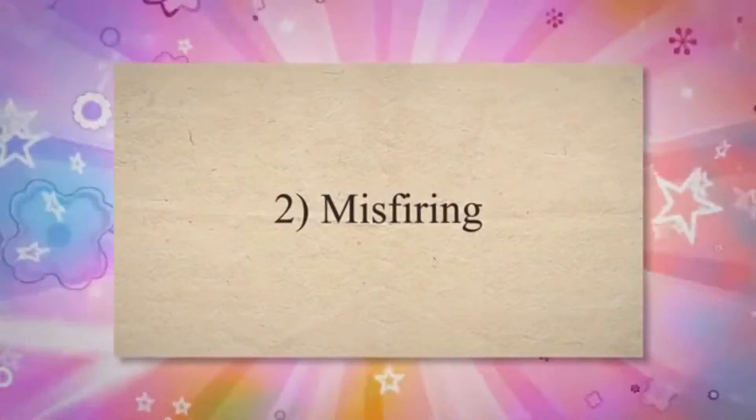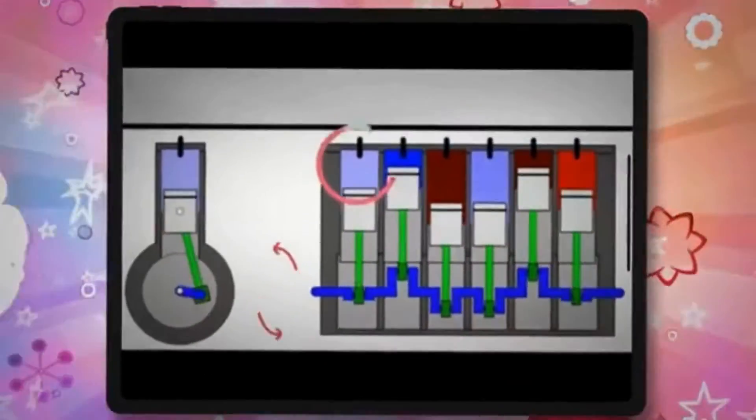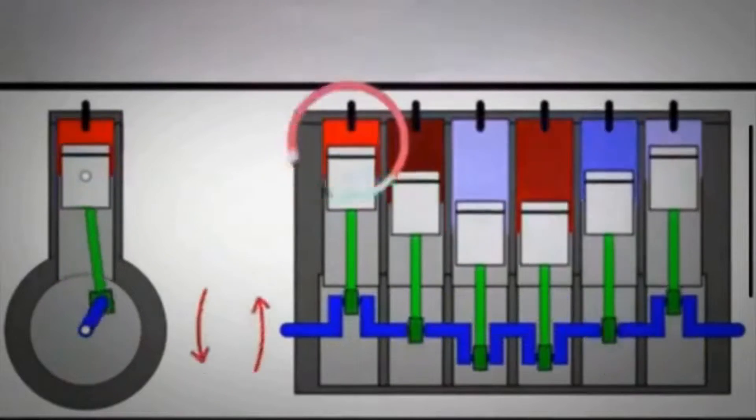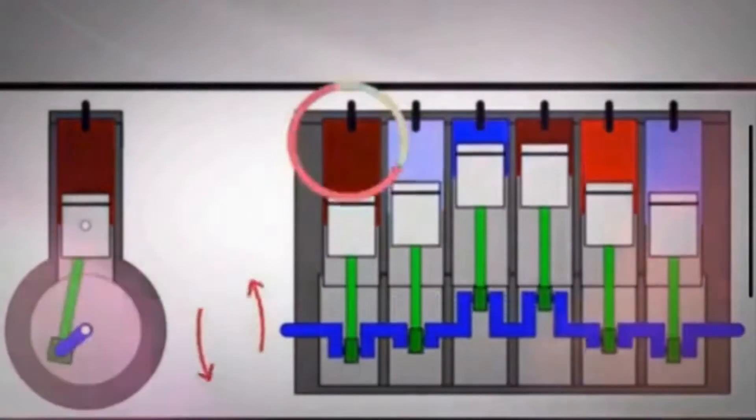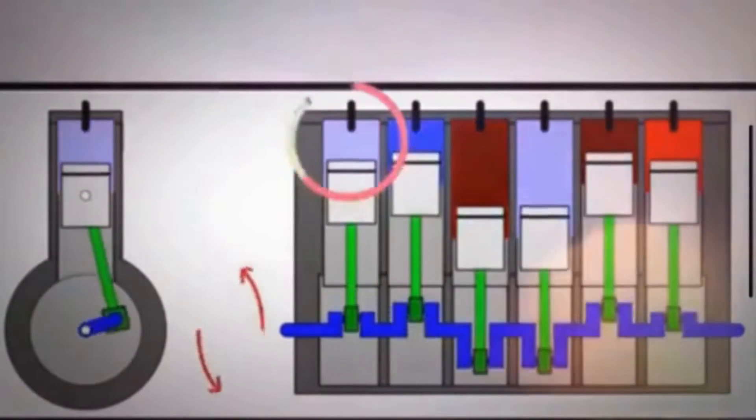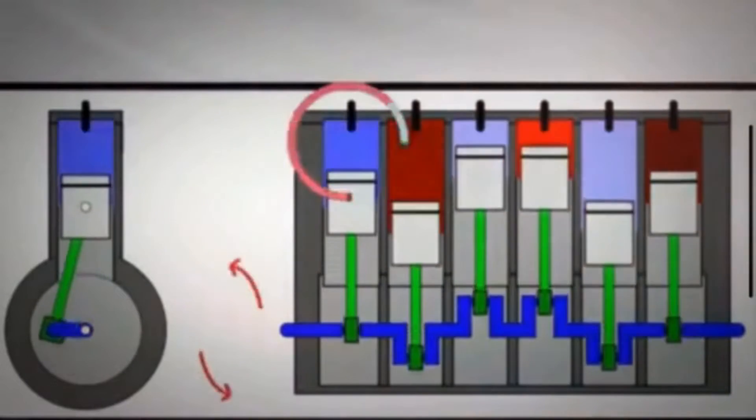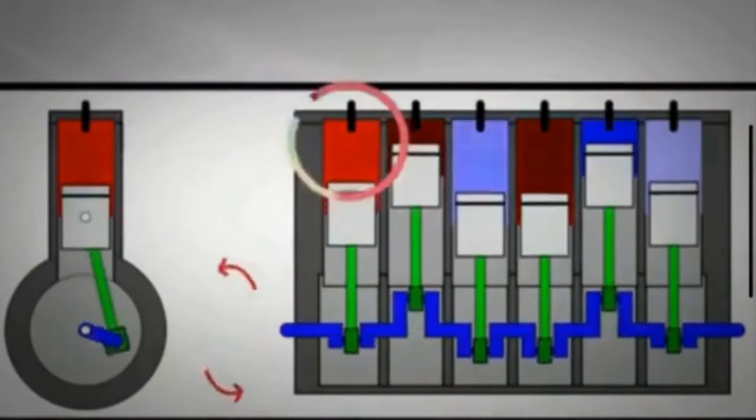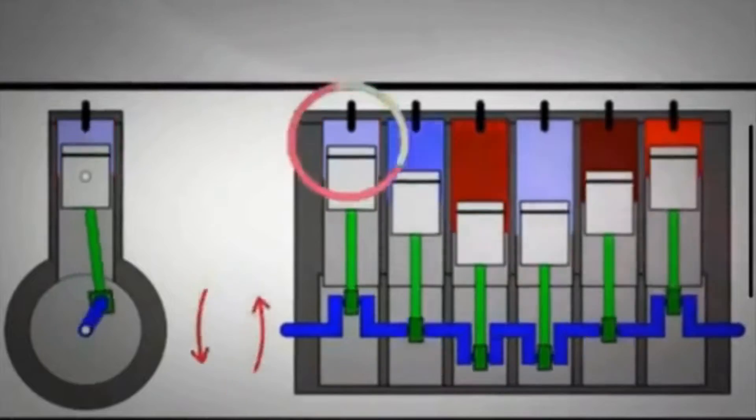Misfiring. A bad camshaft can disrupt the precise timing of valve opening and closing, causing misfires. Misfires occur when the air-fuel mixture in the cylinders fails to ignite properly. This leads to a loss of power and rough engine operation.